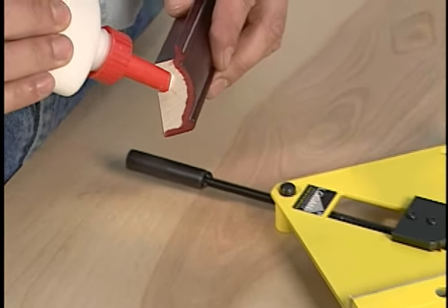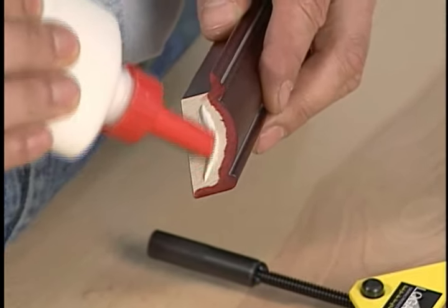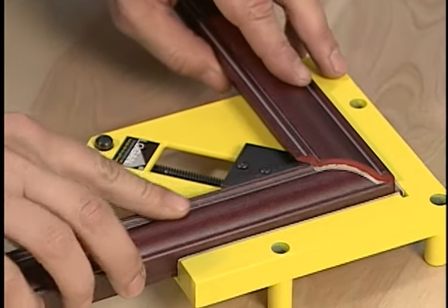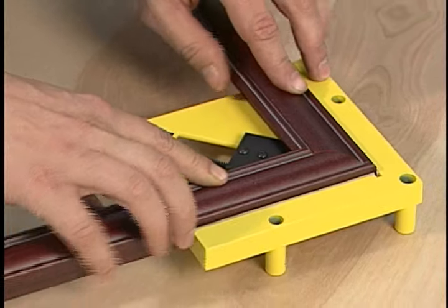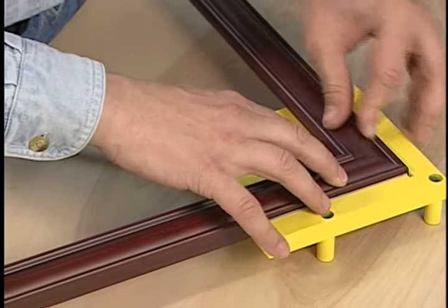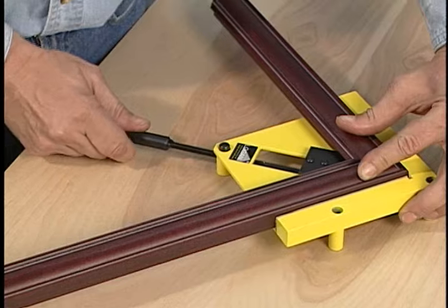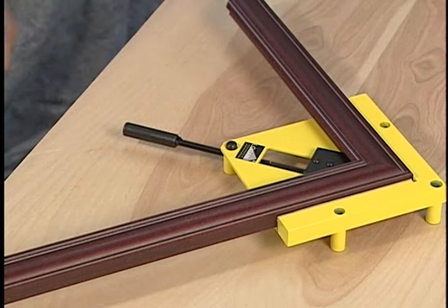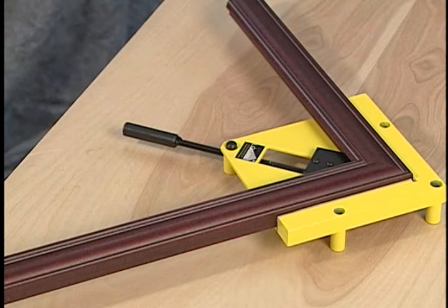Pre-glue each corner to be joined with a quality wood glue. Place both sides of the corner into the molding vise and tighten the handle to snug the vise foot in place. Do not over tighten. A simple snugging of the handle is more than sufficient pressure to clamp the molding in place.